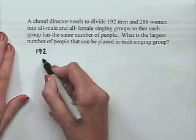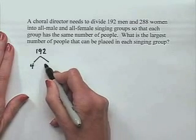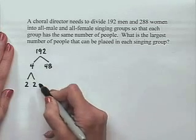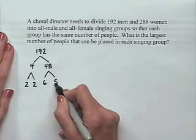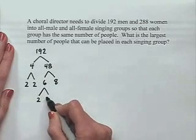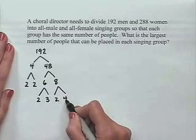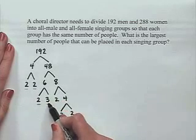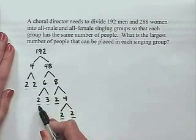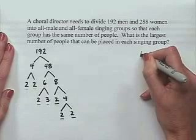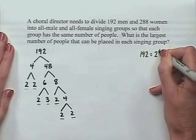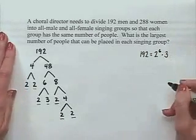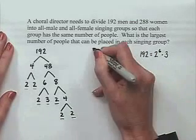We'll find that by looking at the prime factorizations. For 192: we divide by 4, giving 4 times 48. Then 4 is 2 times 2; 48 is 6 times 8; 6 is 2 times 3; 8 is 2 times 4; and 4 is 2 times 2. Counting up the 2s, we have 6 powers of 2. So 192 equals 2 to the 6th power times 3.